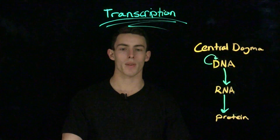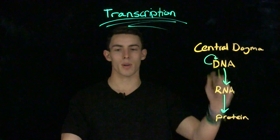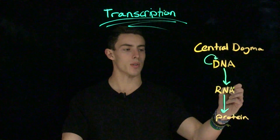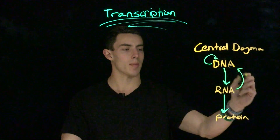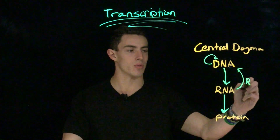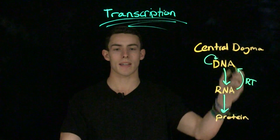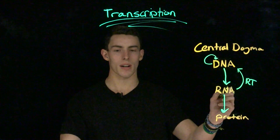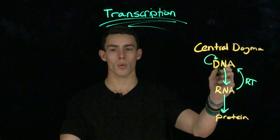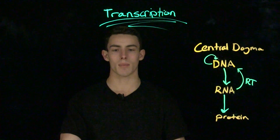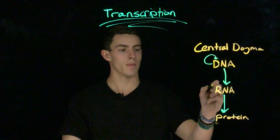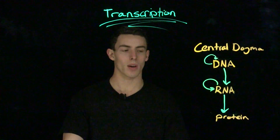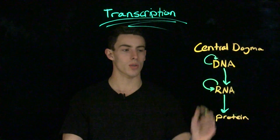However, even the central dogma is not perfect in describing the flow of information. Certain viruses, such as human immunodeficiency virus, or HIV, contain an enzyme called reverse transcriptase, which can turn RNA into DNA. HIV uses reverse transcriptase to take its RNA genome and insert it into its host DNA genome. RNA replication can also occur — the coronavirus uses an enzyme called RNA-dependent RNA polymerase to replicate its RNA.